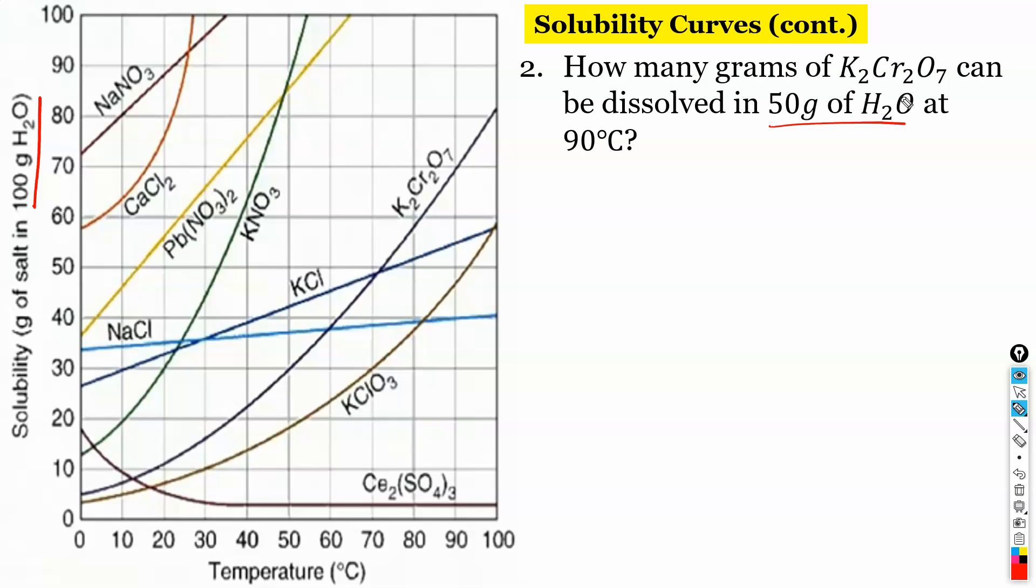So let's find it at 90 degrees. Okay and we're looking at this curve right here. So let's go on up. Okay and then go over. So we hit 70 here.